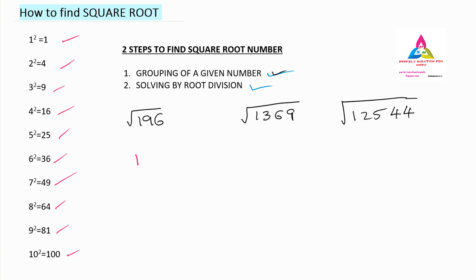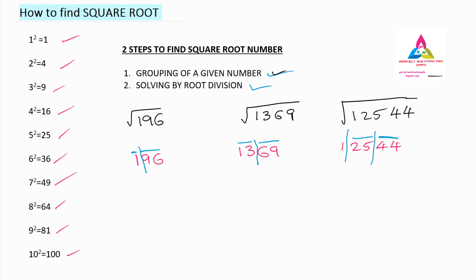To find the root of 196, we write down 196 first. Now we have to do the grouping. Since square root means 2, we start from the unit place and group two digits at a time. So 96 is one group and 1 is one more group. For 1369: starting from unit place, 69 is one group and 13 is one more group. For 12544: 44 is one group, 25 is one more group, and 1 is one more group.